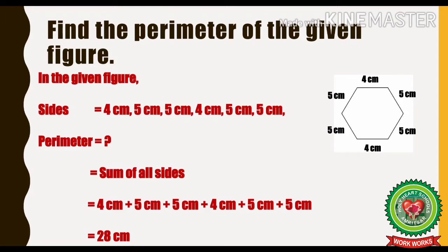We have to find out the perimeter of the given figure. We will use the formula sum of all sides. Let us add all the sides: 4 cm plus 5 cm plus 5 cm plus 5 cm plus 4 cm plus 5 cm plus 5 cm, which is equal to 28 cm. So the perimeter of the given figure is 28 cm.